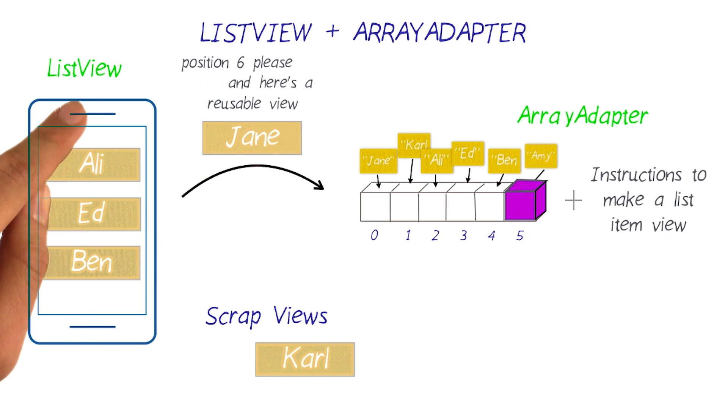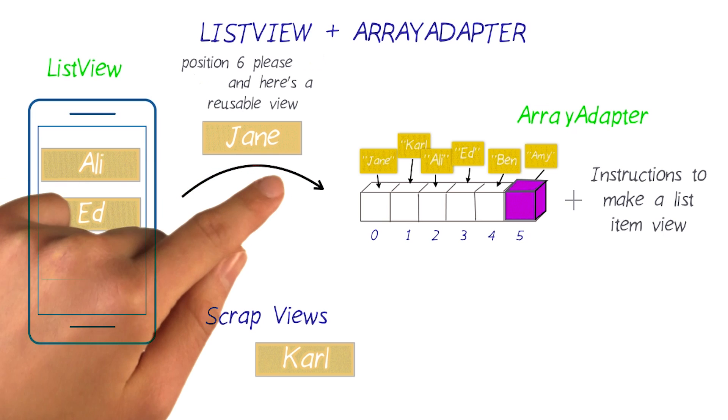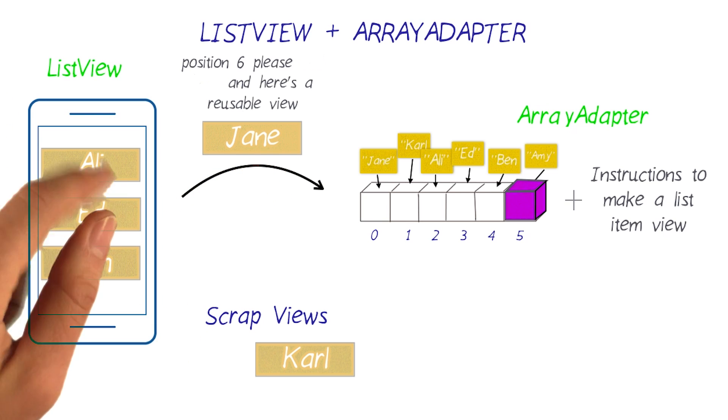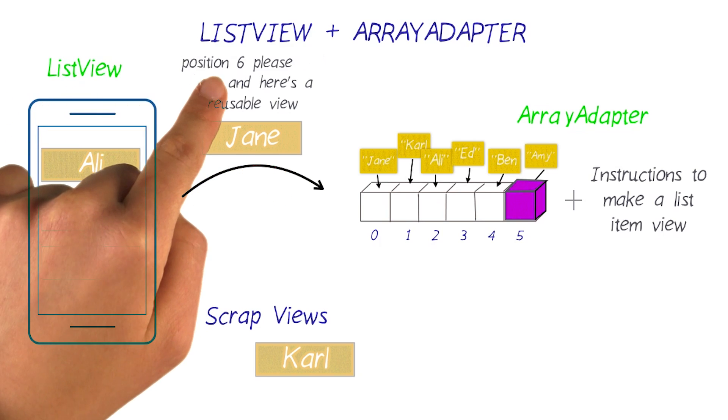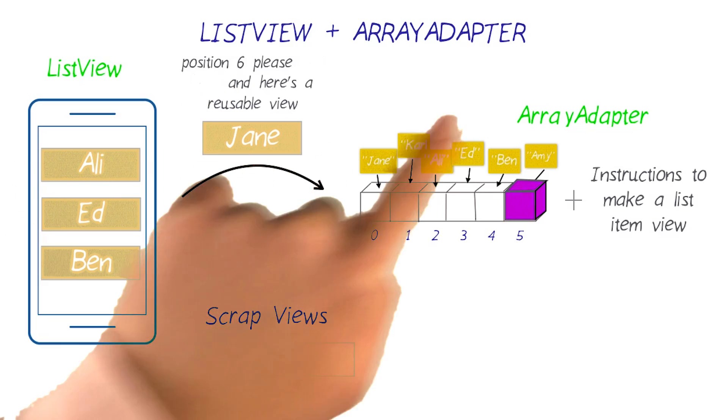The list view will request the list item view for a certain position in the list and also pass along a view that was previously used before. In this example, the list view is requesting the item at position six and passing in the reusable view from before to the array adapter.